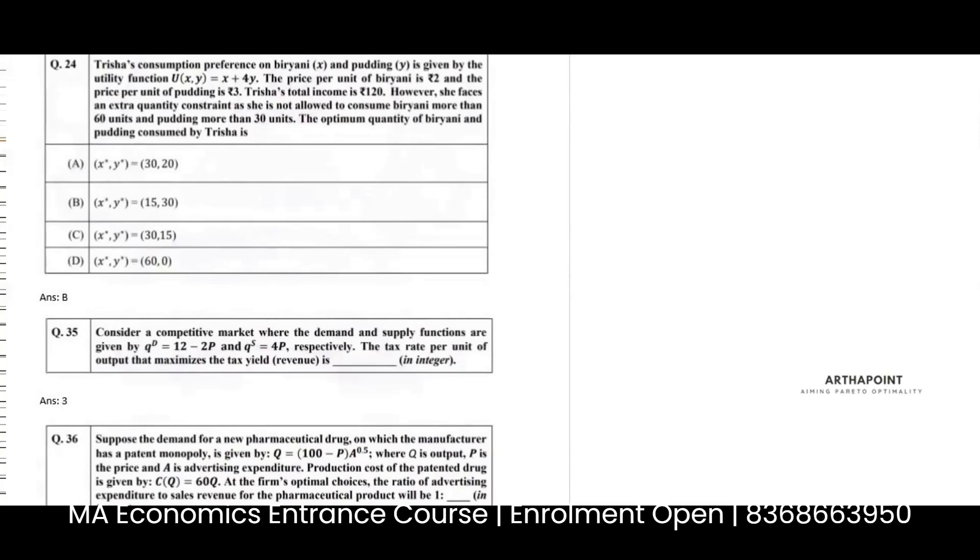So Trisha's consumption function is given by utility function U(X,Y) = X plus 4Y. The price of biryani, biryani is given by X. So the price of X is 2 rupees, and the price per unit pudding is 3 rupees. So price of Y is 3. Trisha's total income is 120. However, she faces an extra quantity constraint as she is not allowed to consume biryani more than 60 units and pudding more than 30 units. Her optimum quantity of biryani and pudding consumed by Trisha is.